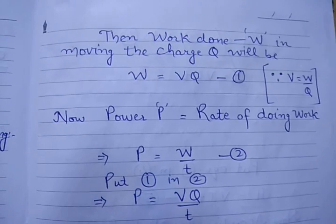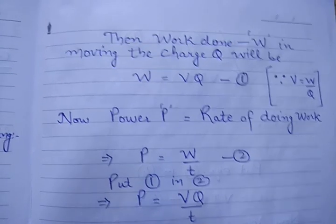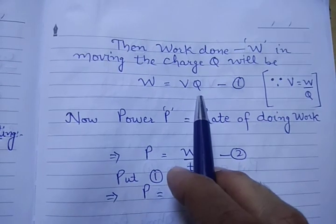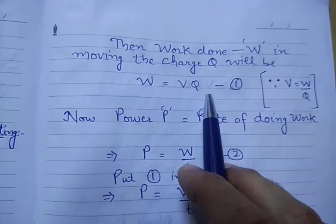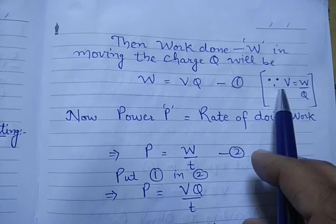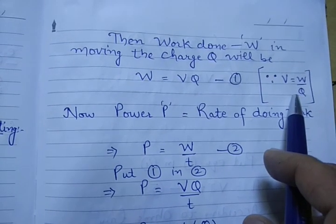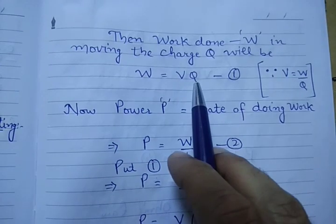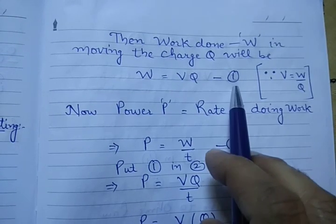Then the work done W in moving the charge Q will be W equals potential difference into charge. How is this equation there? Because we know that potential difference is work done per unit charge. So after cross multiplying, we will get W equals potential difference into charge. Let this be equation number 1.